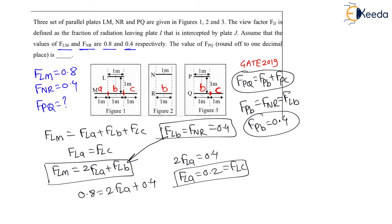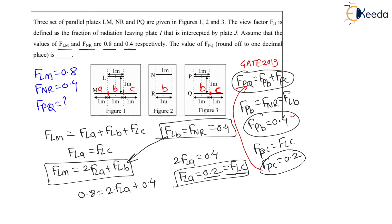Therefore F_PQ equals F_PB plus F_PC. Now F_PB is exactly similar to N-to-R, which is also similar to L-to-B. Therefore F_PB equals 0.4. And F_PC is similar to F_LC, which equals 0.2. So F_PQ equals 0.4 plus 0.2, which equals 0.6.